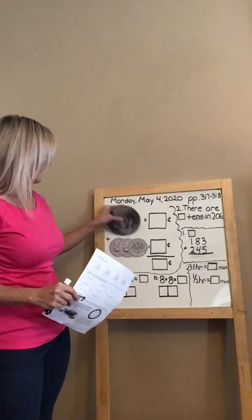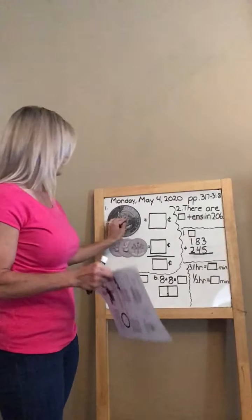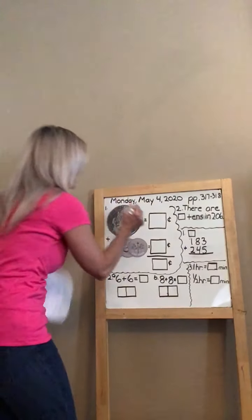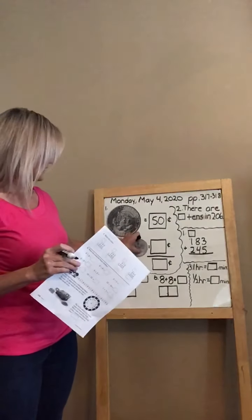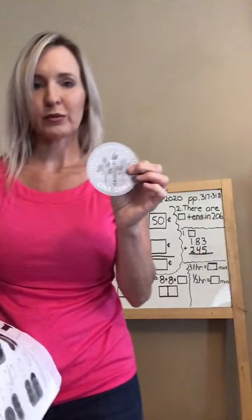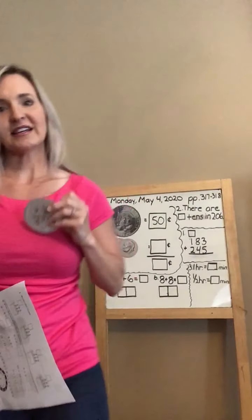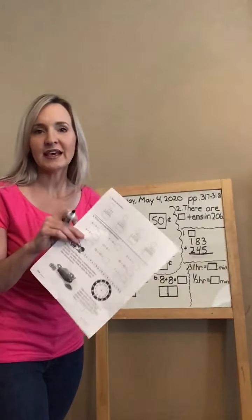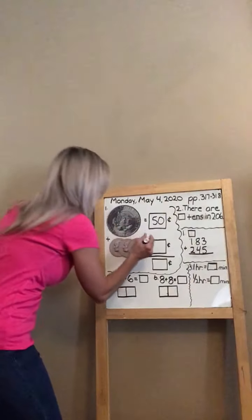The first coin is the biggest coin we discussed — the half dollar. The half dollar is worth how many cents? It's half of a dollar, so 50 cents. Go ahead and fill that in. The next coin is the dime — remember the torch on the back. The dime is worth 10 cents, but you have three of them, so count by tens: 10, 20, 30 cents.